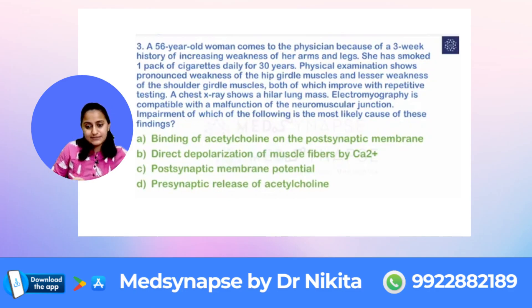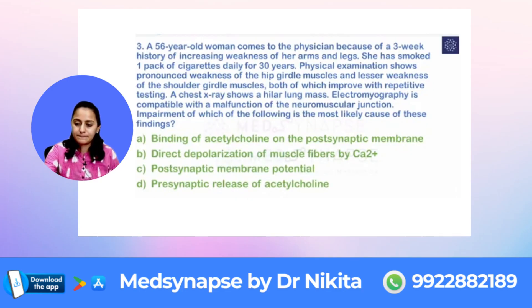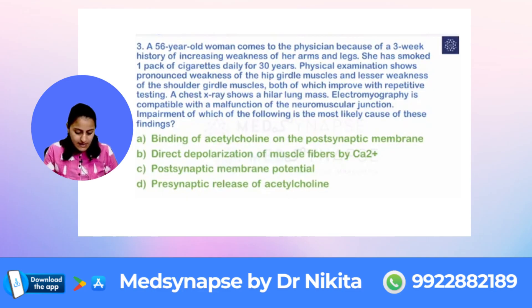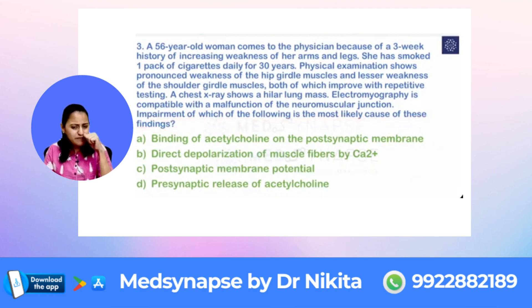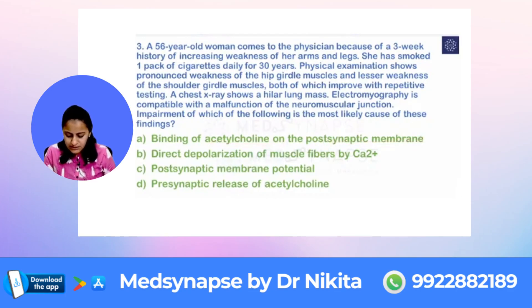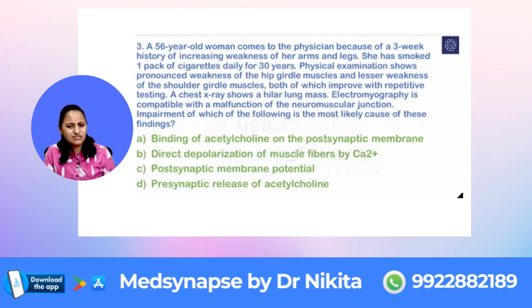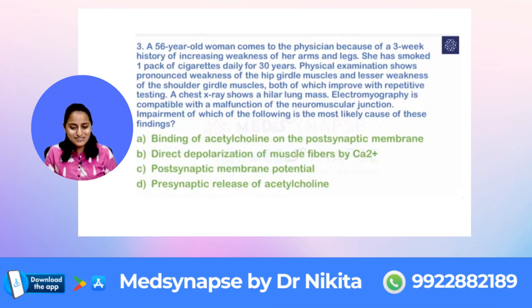Tell me what do you think is the answer to this one. Let's have a look at this one — impairment of which of the following is the most likely cause of these findings? We are looking at the options. We know it is something related to acetylcholine on the post-synaptic membrane, then pre-synaptic — something related to your neuromuscular junction, myasthenia gravis, Lambert-Eaton syndrome. So what do you think will be the answer here?